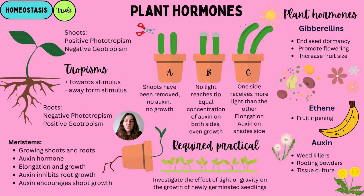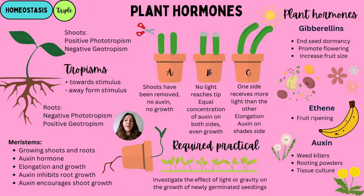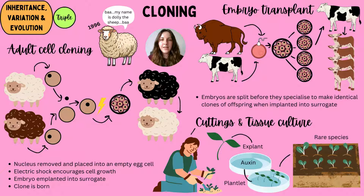In case C — normal everyday plants — one side receives more light than the other. The shaded side has an increased level of auxin, causing that side to elongate more, producing curvature so the plant grows toward the light. There are other plant hormones: gibberellins help end seed dormancy, promote flowering, and increase fruit size; ethene helps fruit ripen; auxin is used in weed killers, rooting powders, and tissue culture to encourage growth.